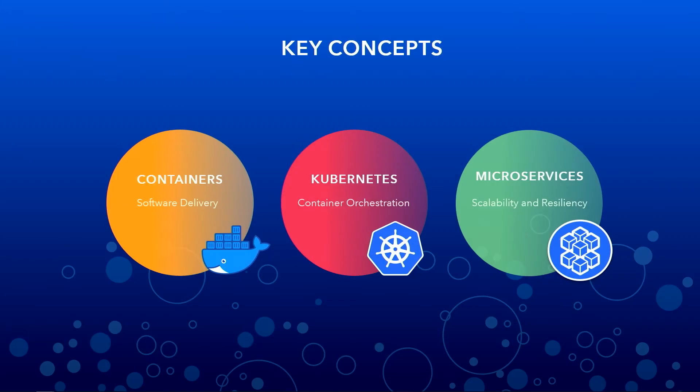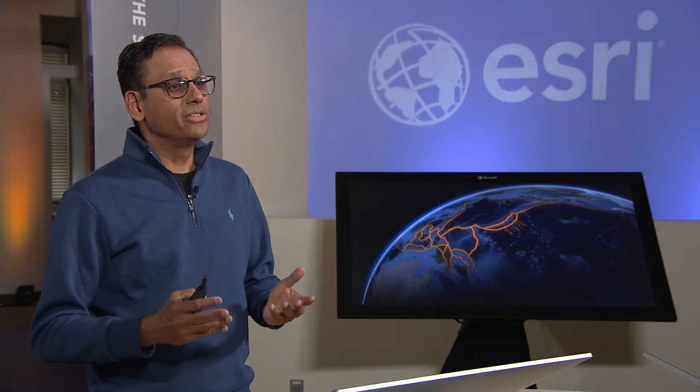The next is how we run the software. It runs on an orchestration fabric called Kubernetes, which is designed for cloud architectures. It's like a distributed operating system. You can manage this fabric as if it was one cluster, one unit, making it very easy to deploy, manage, monitor, and scale.